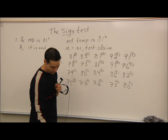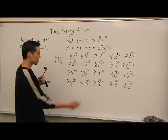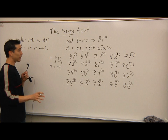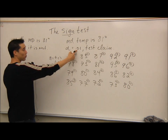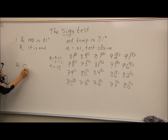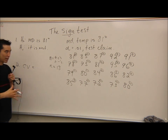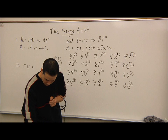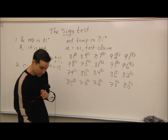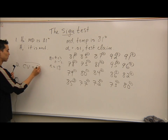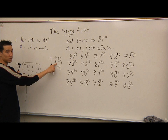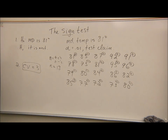I have a two-tailed test, alpha is 0.01, and N is 18. That allows me to look up my critical value in the chart. Step two: the critical value — you look it up in the chart. N is 18, alpha is 0.01, two-tailed test. The critical value is 3.